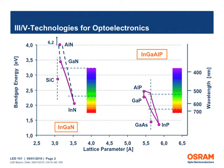This graph shows the band gap energies and corresponding wavelengths for two major semiconductor materials used for LEDs today. InGaN, or indium gallium nitride, is used for violet, blue and green LEDs, whereas InGaAlP, or indium gallium aluminum phosphide, is used for green, yellow, orange and red LEDs.